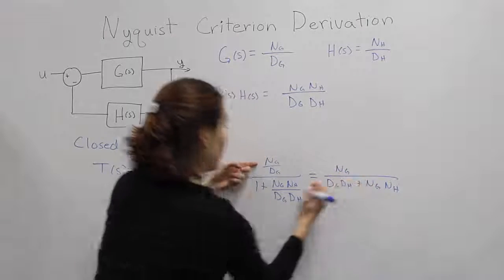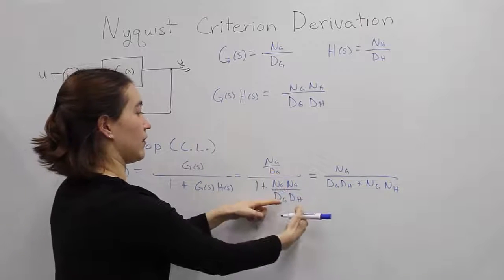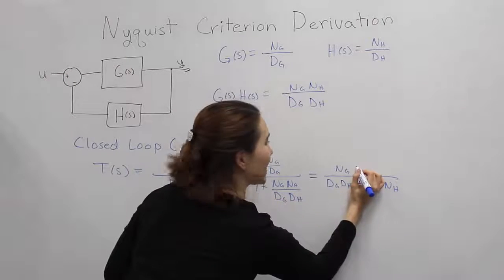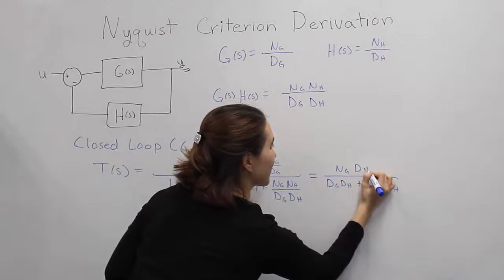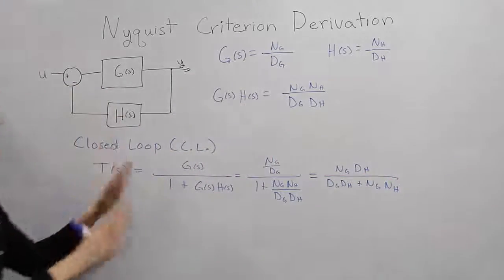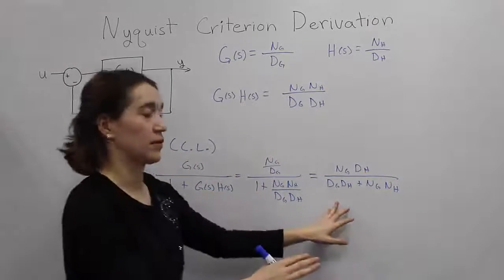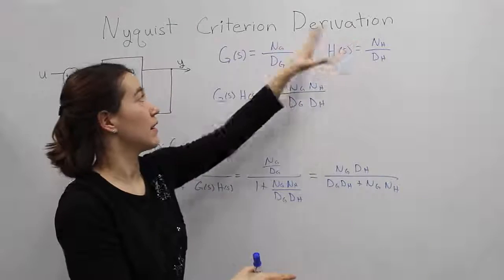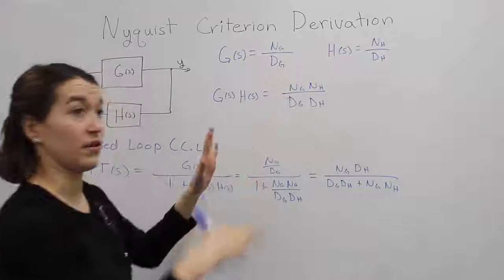This cancels with that, and we have, multiplied by dG, dH, rather, dH. Okay, so this is our closed-loop transfer function written in these terms, our numerator and denominator terms.